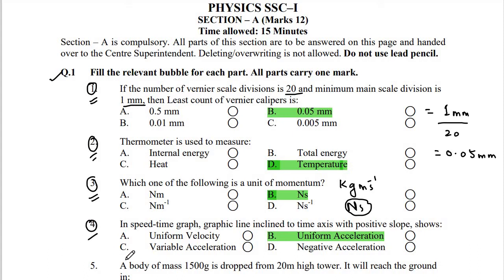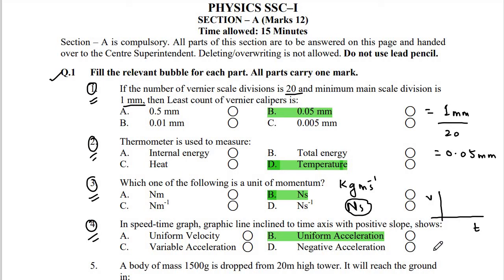Number 4: In a speed-time graph, a line inclined to the time axis with a positive slope shows uniform velocity, uniform acceleration, variable acceleration, or negative acceleration? Recall the speed-time graph: the horizontal axis is time (t) and the vertical axis is speed (v). A line inclined like this on a v versus t graph shows uniform acceleration, so option B is the right answer.